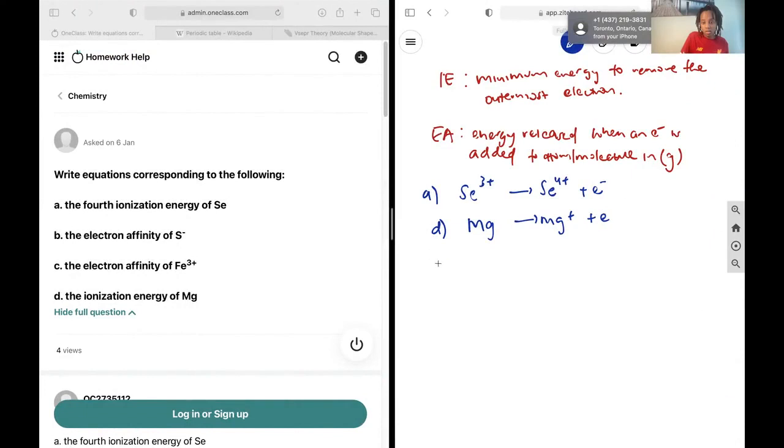And this is correct. And then lastly, let's do our electron affinity questions. So we have S⁻, and we're asking for the electron affinity, which means the energy released when an electron is added. That means that we're going to add an electron, and that now is going to produce S²⁻.